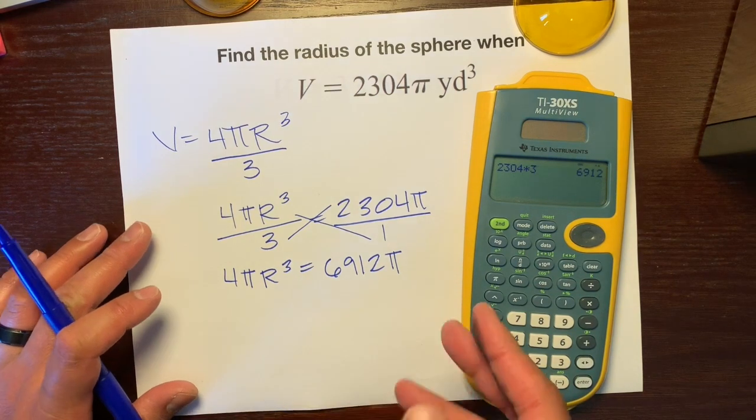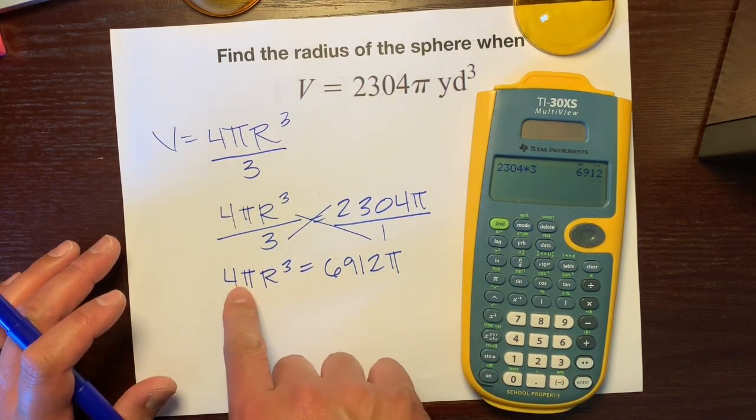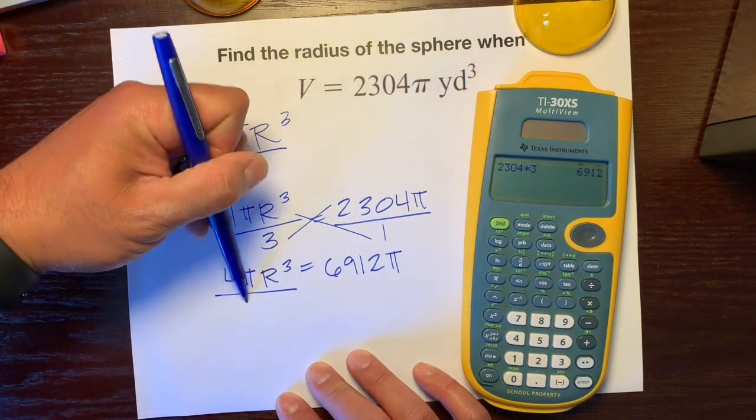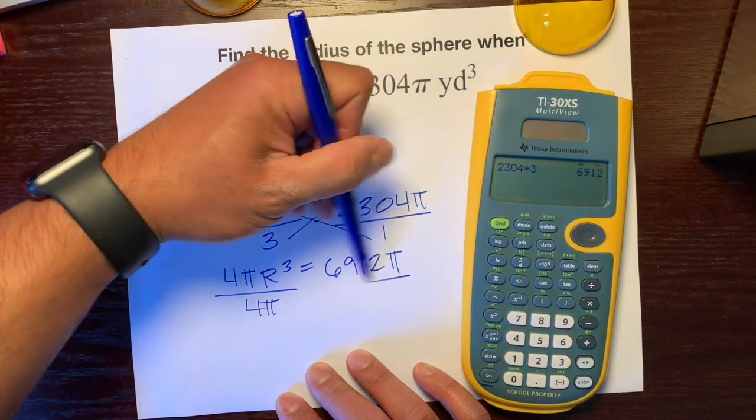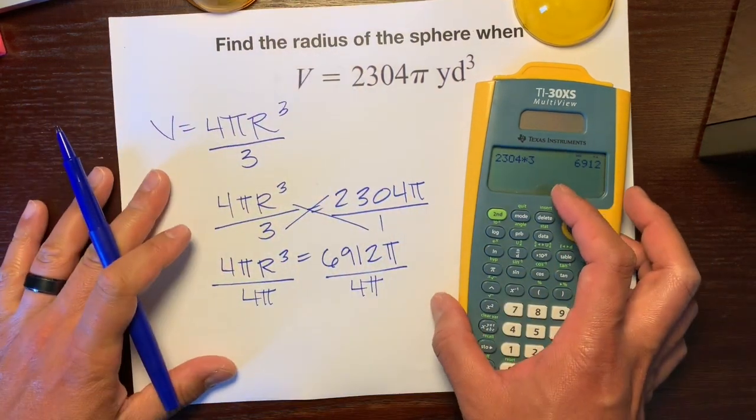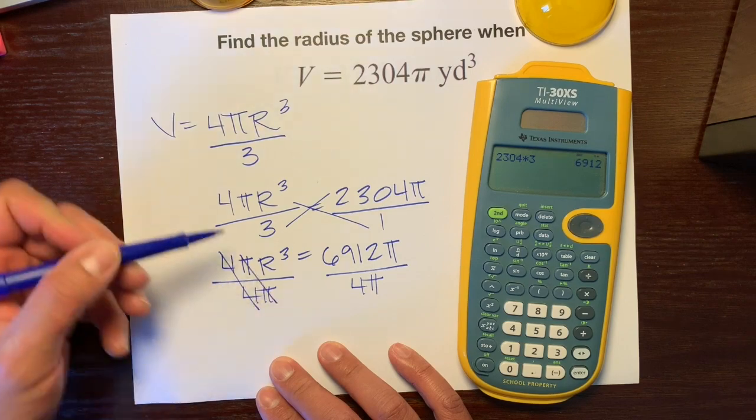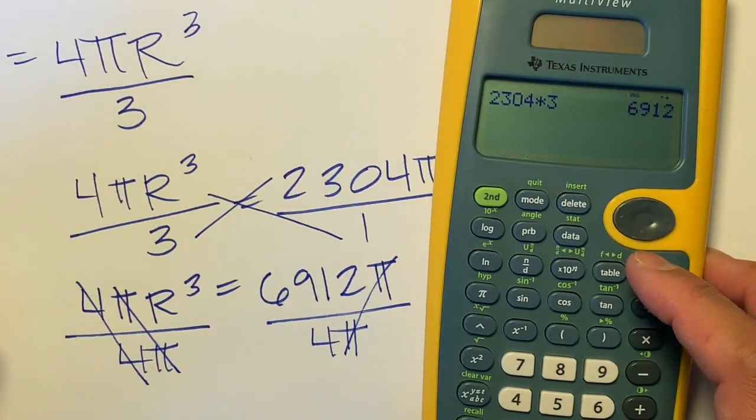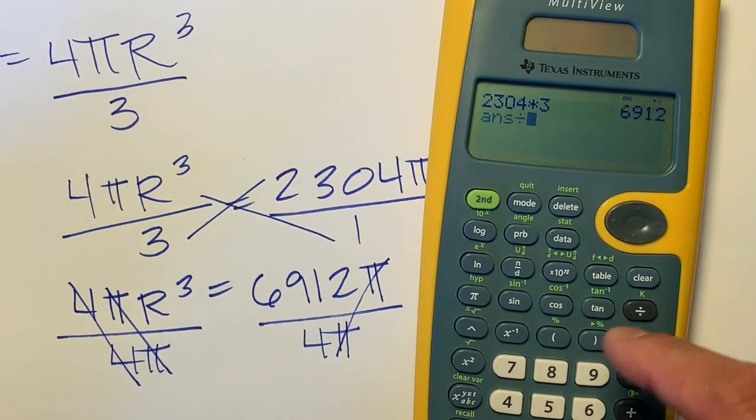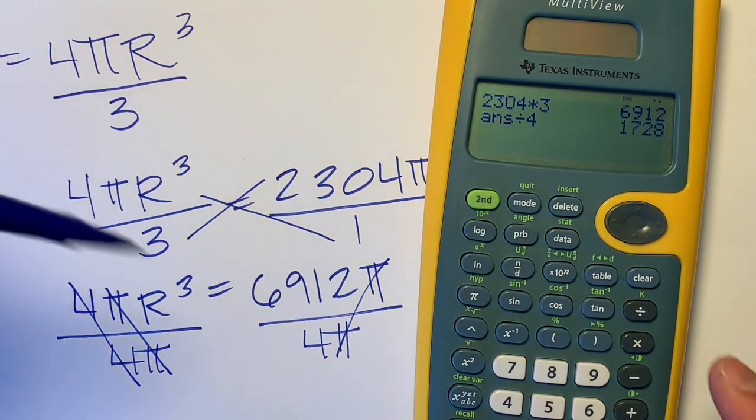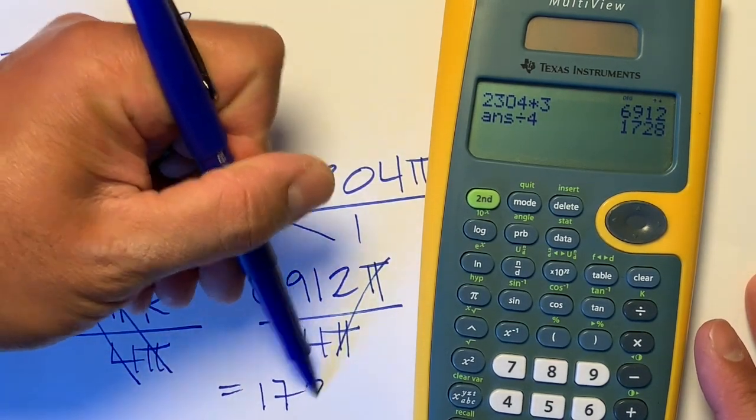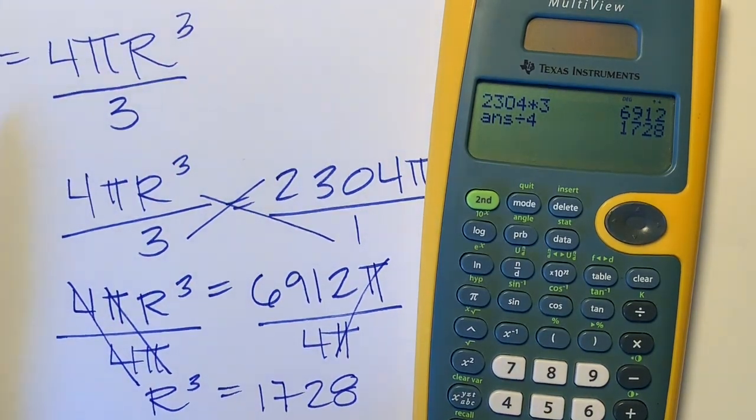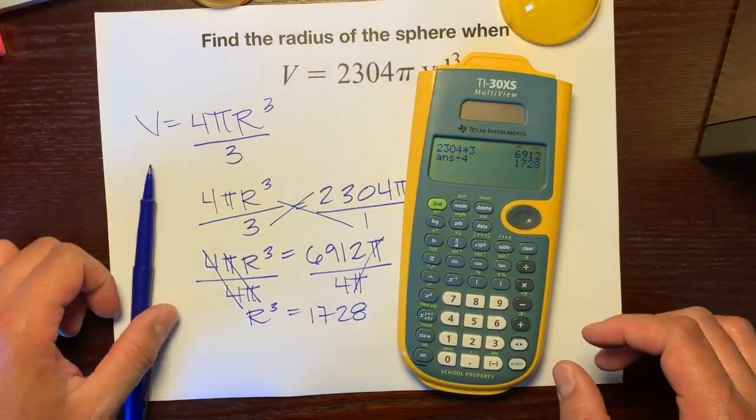All right, so let's go on to the next step. To get r by itself, this is being multiplied by 4 and π. The opposite of multiplication is division, so divide both sides by 4π. These cancel out, and let's go to our calculator. 6,912 divided by 4 is 1,728, equals r³.